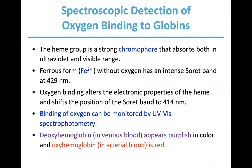The heme group is a strong chromophore that absorbs in the ultraviolet and visible range. Hemoglobin basically lives in red blood cells.